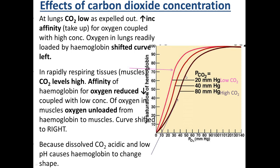When the blood gets to the rapidly respiring tissues — the muscle cells — if the muscle is respiring, it gives off more carbon dioxide. So in the tissues there is a high concentration of carbon dioxide, which means the curve shifts to the right. The hemoglobin therefore has a lower affinity for oxygen, which means it gives off oxygen more easily to the tissues. This shift to the right due to high carbon dioxide concentration is known as the Bohr shift.